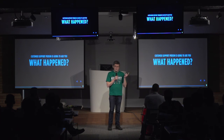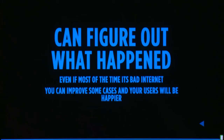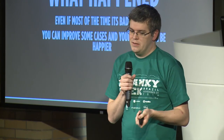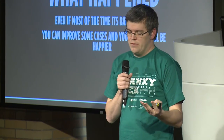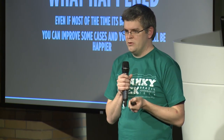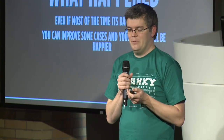As a summary: when your customer support person asks what happened, now you have the data to answer — the API traces and the getStats data. Most of the time, honestly, it's just bad internet and there's not much you can do. But there are some cases where you're doing something wrong, like not running TURN servers, and you can figure that out. If you spend that time, your users will be happier and use your service more, and your service will grow. Thank you.